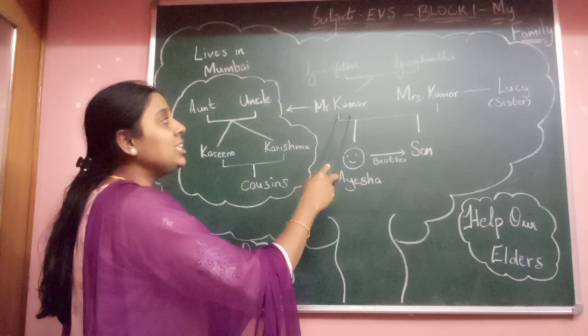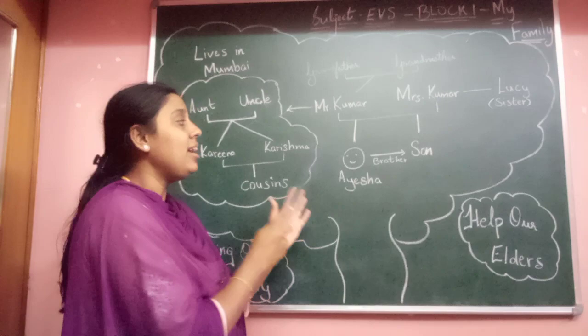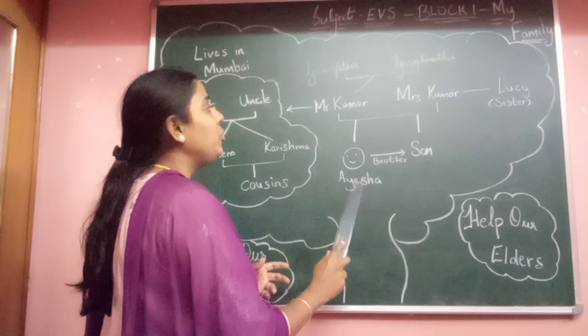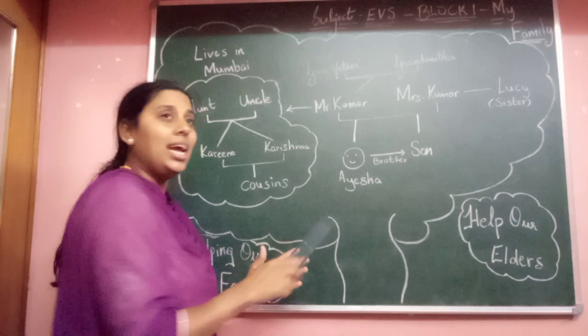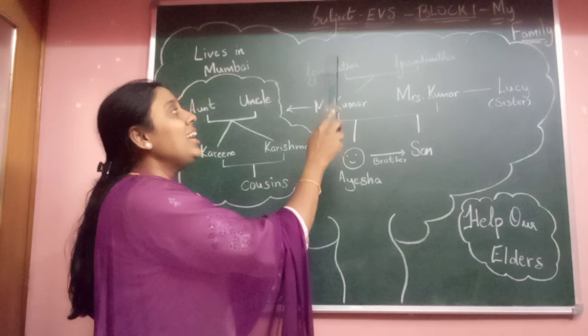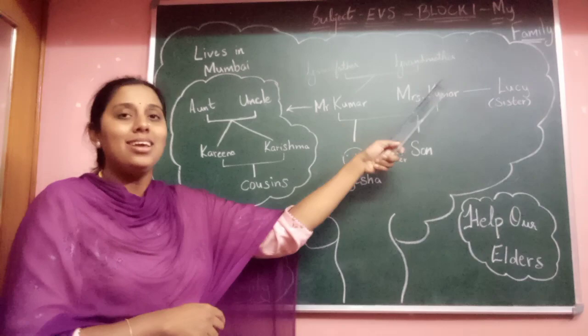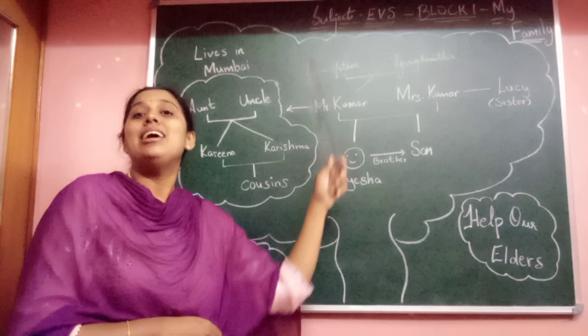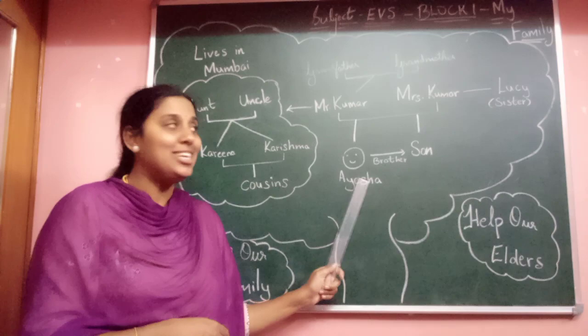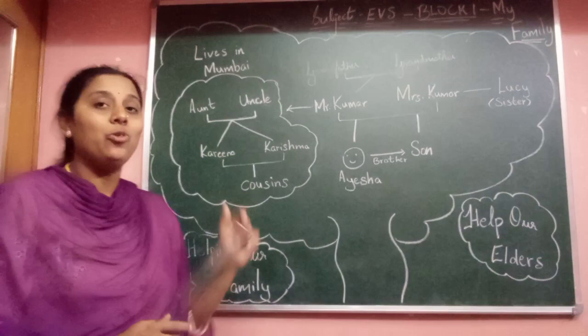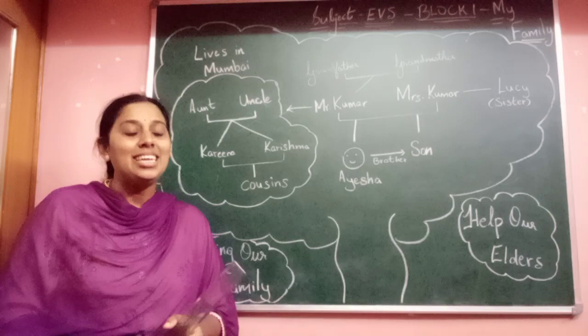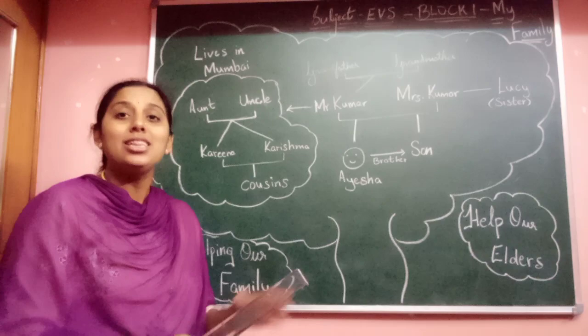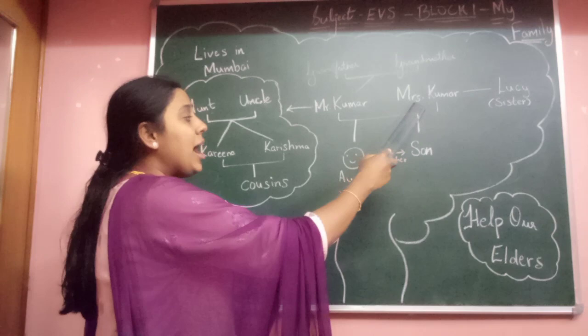Mr. Kumar's parents also live in the same family. They are Aisha's grandparents — her grandfather and grandmother. So Aisha's father's parents are grandparents to Aisha. Since her grandparents also live with them, she lives in a joint family.